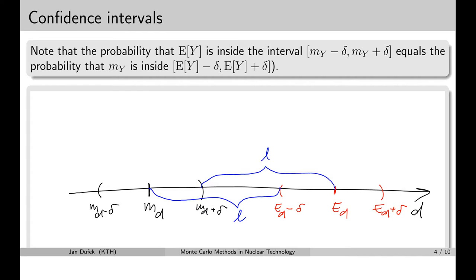When we run the Monte Carlo simulation, the mean value falls around the expectation value. There is some probability it will fall within the interval from E minus delta to E plus delta. This must be the same probability that the expectation value lies within the interval centered around the mean value, simply because both intervals are of the same size and the distances are the same.